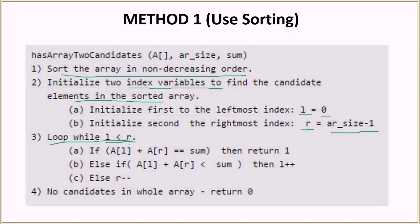While that condition holds, we execute three steps. We check if the sum of elements at index L and R equals the target sum. If it does, we return 1, meaning we found our two elements. Otherwise, we compare the sum of elements at index L and R with the target: if the sum is less, we increment L; otherwise we decrement R.